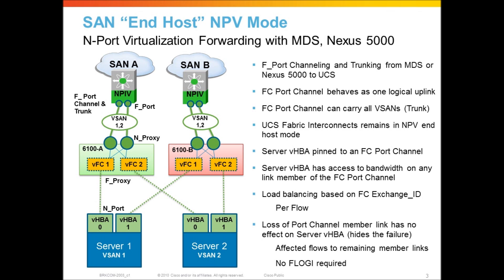We still have our two servers. To illustrate the difference, server 2 is in vSAN 2 and server 1 is in vSAN 1. Before, we had to have individual fiber channel uplinks per vSAN. In this case, I have two uplinks per fabric interconnect, but now I can put those two uplinks into a port channel — an FC port channel — and still attach that port channel to an F port upstream running NPIV on the MDS or Nexus 5000. This is F-port channeling, which allows me to take two physical fiber channel links and bundle them together into a single port channel.